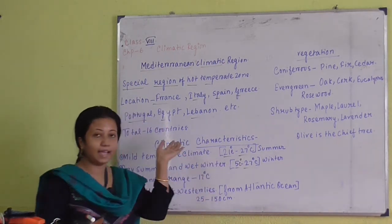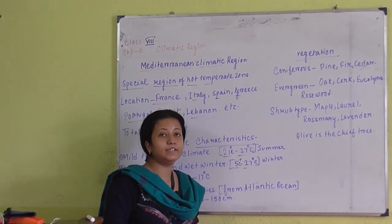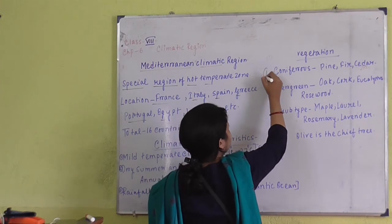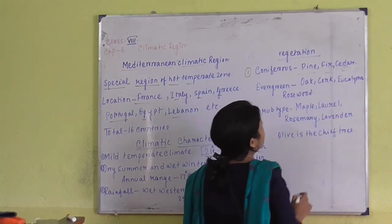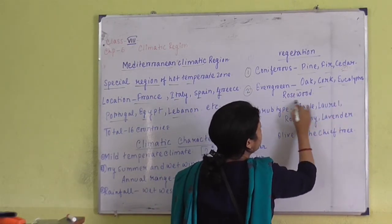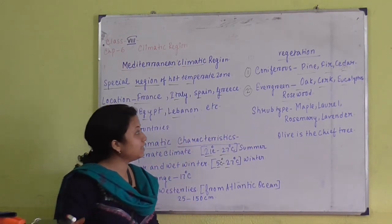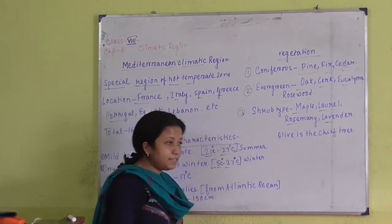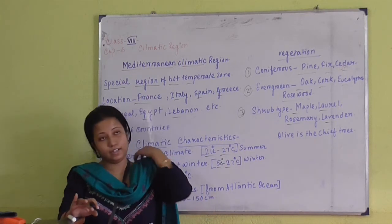Climate and vegetation are very much related to each other. Mediterranean climate gives a varied type of vegetation. First, coniferous vegetation includes trees like pine, pearl, and cedar. Second, evergreen vegetation includes oak, cork, eucalyptus, and rosewood. Third, the shrub type includes maple, laurel, rosemary, and lavender. The main tree in this climatic region is the olive, which is the chief tree here.